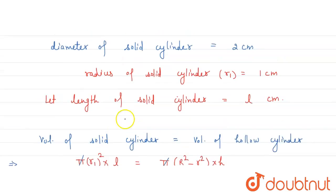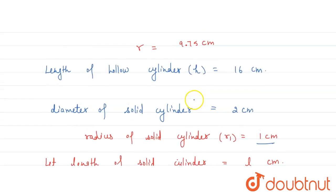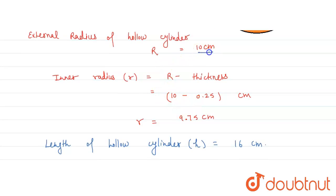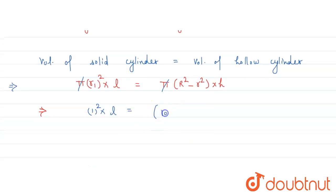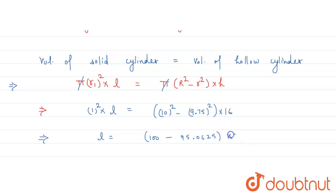Cancel out pi from both sides. So we get R1 squared. R1 is 1, so 1 squared multiplied by L equals capital R squared minus small r squared, multiplied by small h. Value of capital R is 10 centimeters, so 10 squared minus 9.75 squared, multiplied by 16. This equals 100 minus 95.0625, multiplied by 16.